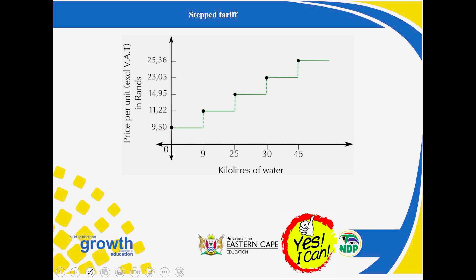Looking at this stepped tariff, I've represented it graphically. On the X-axis (horizontal), we have kilolitres of water — these are the units. On the Y-axis, we have the amount in rands — the price per unit, which we call the tariff. We have blocks: block one covers zero to nine kilolitres, charged at nine rand fifty cents per kilolitre.